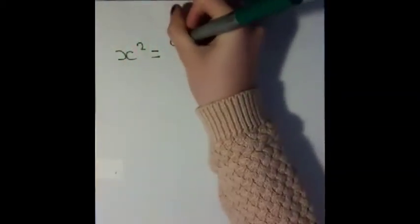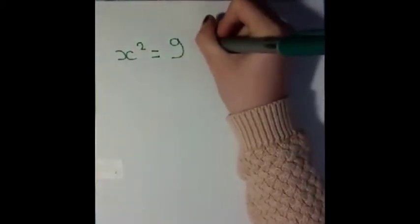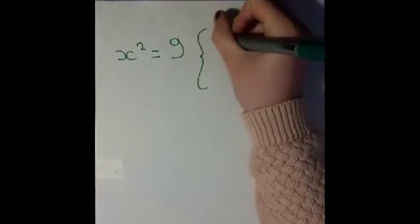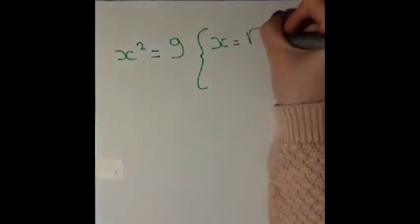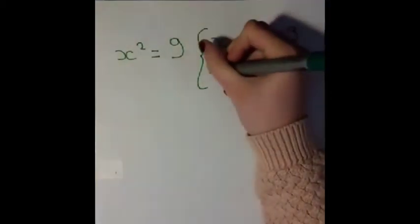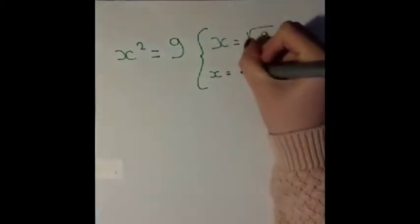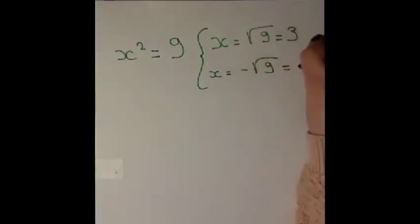For instance, we have x squared equals 9. We have two solutions: x equals square root of 9, which equals 3, or x equals negative square root of 9, which equals negative 3.